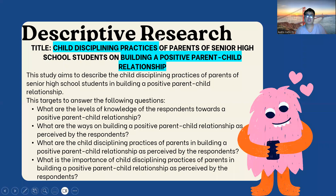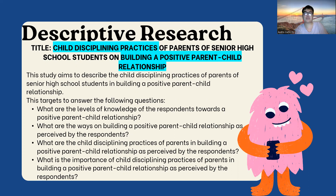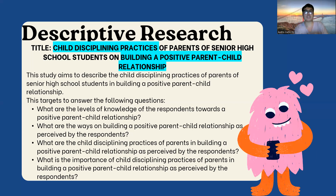For descriptive research, I will give you an example. When you say descriptive research, you are describing the characteristics or how the phenomenon acts. The title here is 'Child Disciplining Practices of Parents of Senior High School Students on Building a Positive Parent-Child Relationship.' This is an example of descriptive research. Based on the general idea or objective, this study aims to describe the child disciplining practices of parents of senior high school students in building a positive parent-child relationship. The goal is to describe the child disciplining practices.